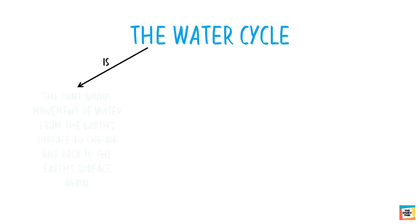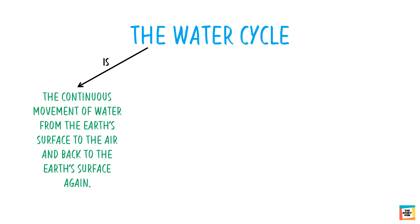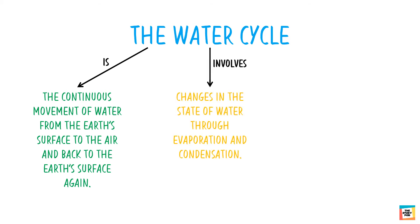The water cycle is the continuous movement of water from the earth's surface to the air and back to the earth's surface again. It involves changes in the state of water through evaporation and condensation.